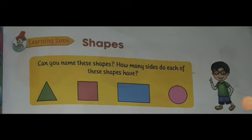Can you name these shapes? How many sides do each of these shapes have? The first one is, yes, triangle. And it has three sides.